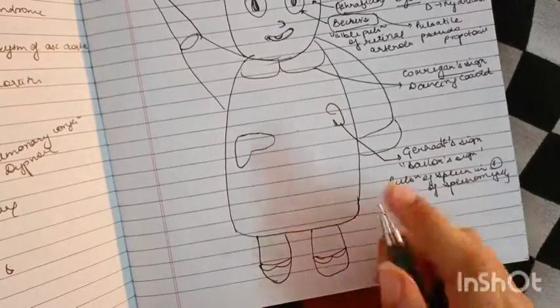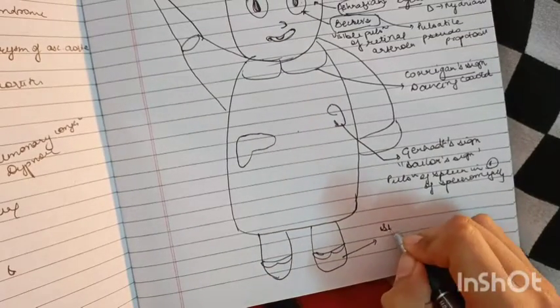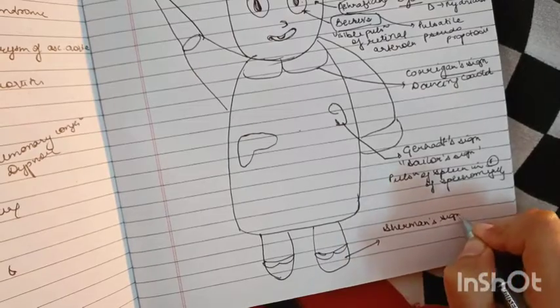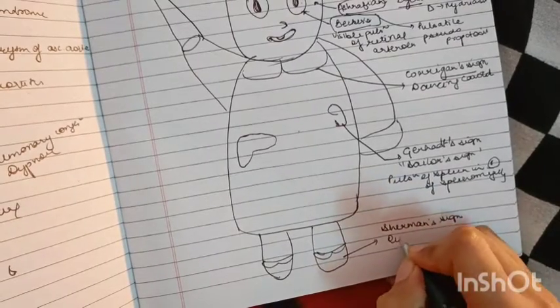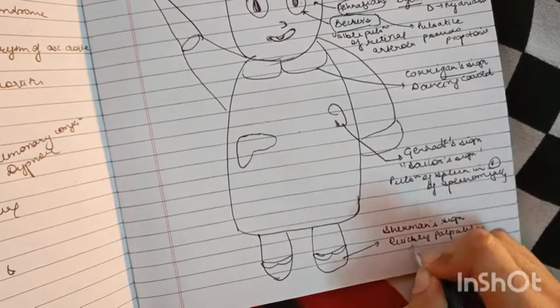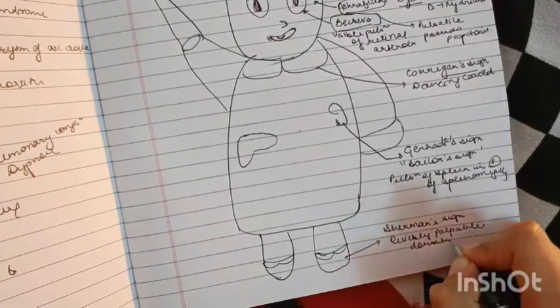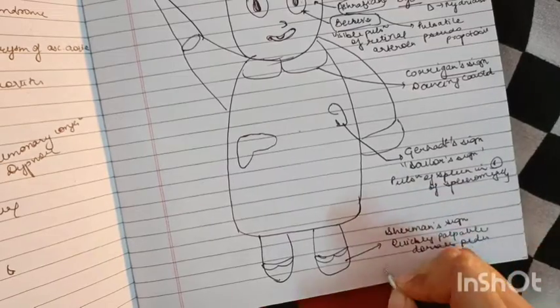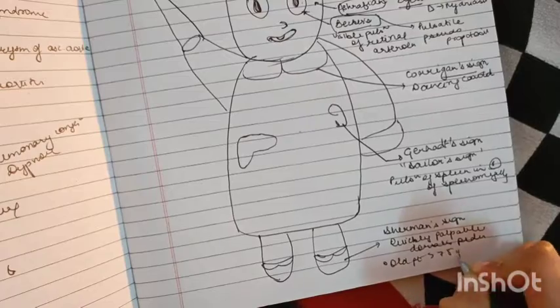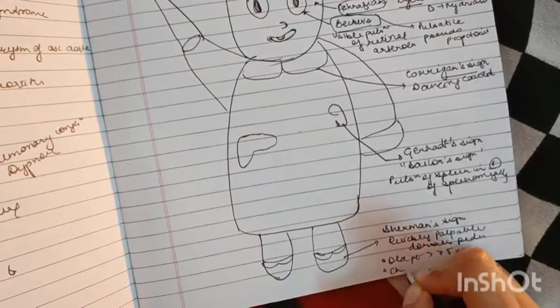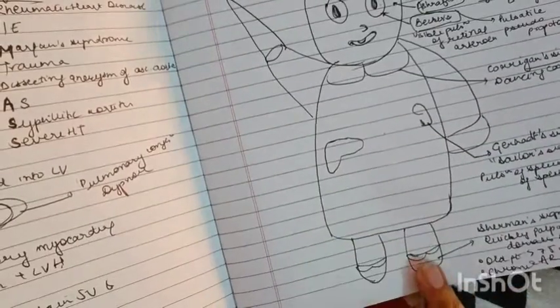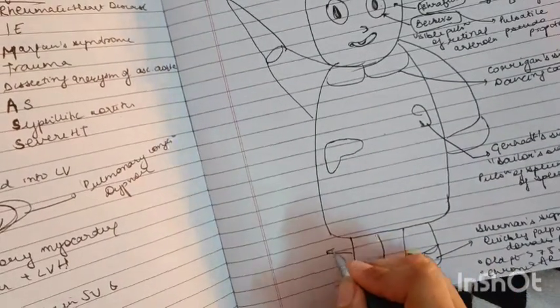Then over the feet, we have Sherman's sign. This is briskly palpable dorsalis pedis. It occurs basically in older patients like more than 75 years of age. Plus it occurs in chronic aortic regurgitation.